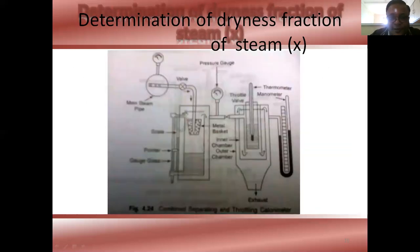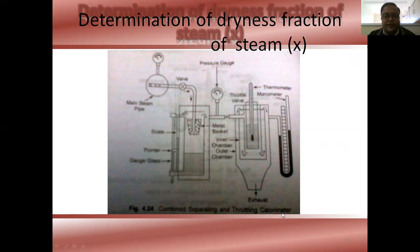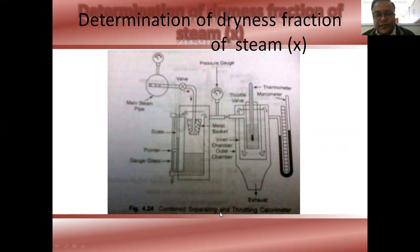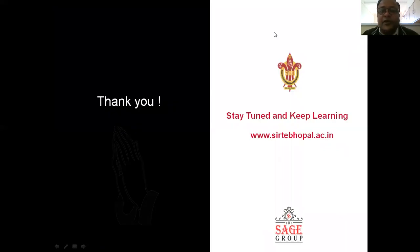This is the arrangement showing the separating calorimeter combined with the throttling calorimeter. This covers the fundamental methods of how we can measure the dryness fraction of steam from pipes and other devices. Thank you. This concludes today's lecture.